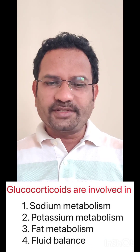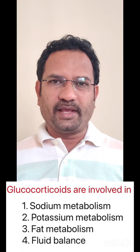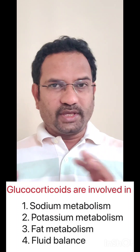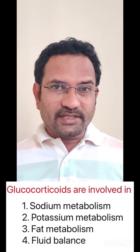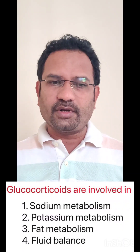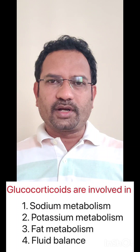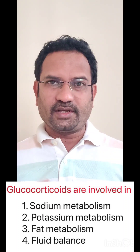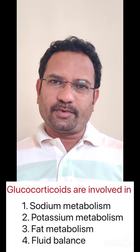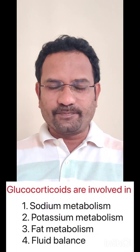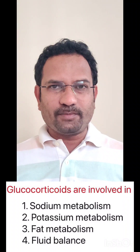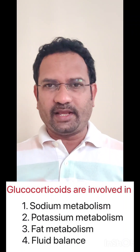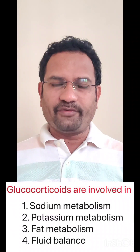Glucocorticoids are involved in? Options given are: sodium metabolism, potassium metabolism, fat metabolism, fluid balance. The natural glucocorticoid present in the human body is cortisol. The adrenal cortex releases corticoid hormones — mineralocorticoids and glucocorticoids. Aldosterone is a mineralocorticoid which controls mineral metabolism. Cortisol is a glucocorticoid which controls fat and carbohydrate metabolism. The answer is fat metabolism. Glucocorticoids increase free fatty acids available in blood circulation by breaking down lipids through increasing the activity of lipoprotein lipase.